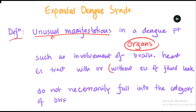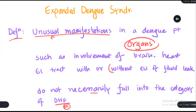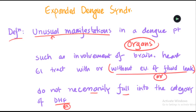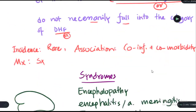The absence of fluid leakage is very important, because if there is no fluid leakage, this syndrome does not necessarily fall into the category of DHF. In DHF you need to have fluid leakage, but in expanded dengue syndrome there may not be any evidence of fluid leakage, so it may not fall into the category of DHF.